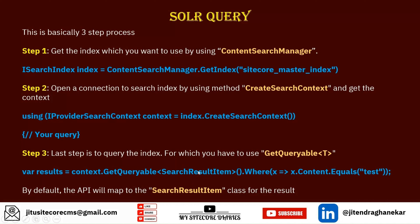If you want to customize it and use your own model, you can — but you have to inherit from SearchResultItem. Then you can write a query like: where x.Content equals 'test', so if the content contains 'test', it gives you those results.